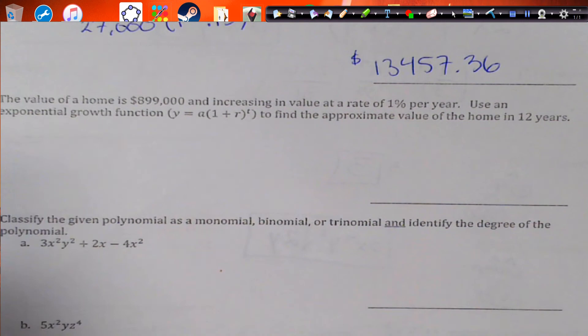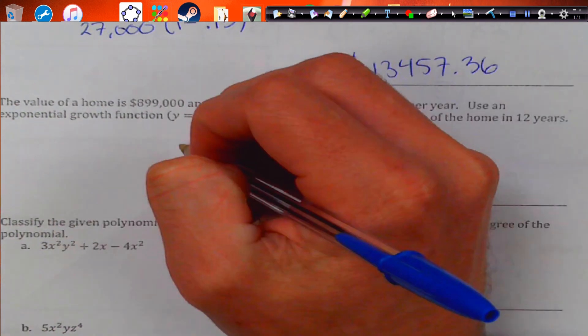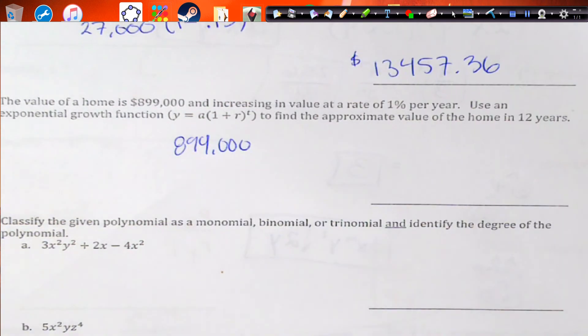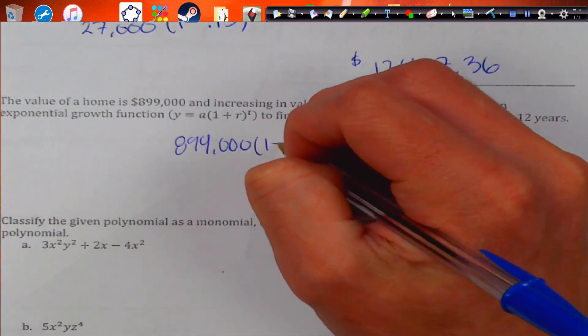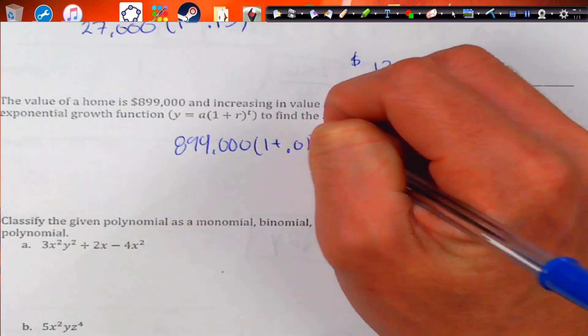The value of a home is $899,000, increasing in value at a rate of 1% per year. Use exponential growth to find the approximate value in 12 years. So our initial value is $899,000. 1 plus 1% is actually 0.01 raised to the 12th power.